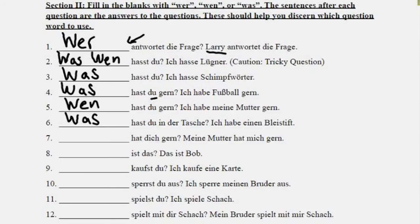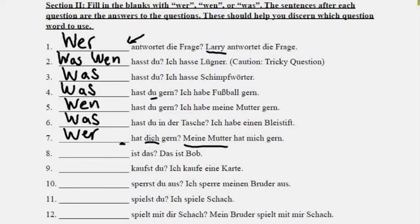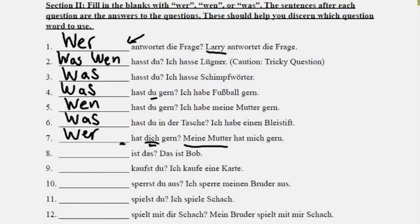Number seven: blank hat dich gern — who likes you? The answer is meine Mutter. Du changes to dich when it's a direct object, which tells us dich is not the subject, so wer must be the subject. Wer hat dich gern? — Who likes you? Number eight: blank ist das — Das ist Bob. Bob is a person and would be very upset if we said 'what is that,' so we say wer ist das? — Who is that?